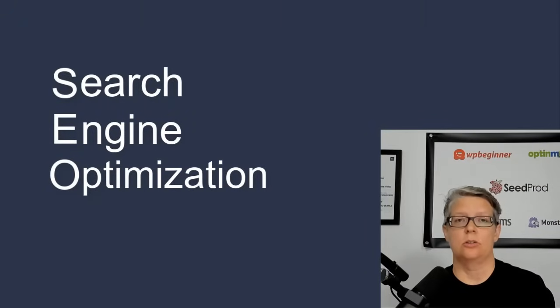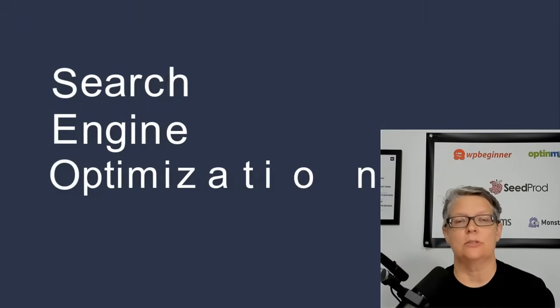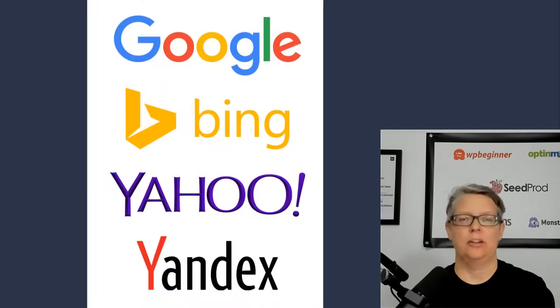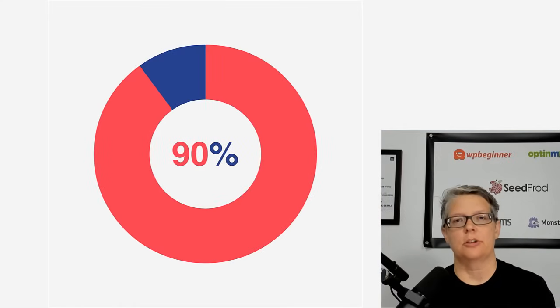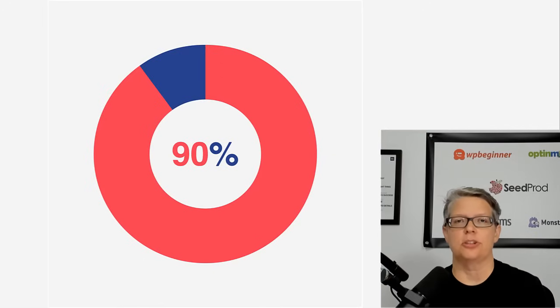If you've done research on how to increase traffic to your website, you've probably seen everybody talking about improving your SEO. But what does that really mean? SEO stands for search engine optimization, or just how easy it is for Google to find your website. There are several different search engines out there — things like Bing, Yahoo, and Yandex — but 90% of searches are done on Google, so that's usually what we're talking about when we say search engines.